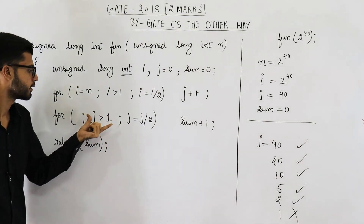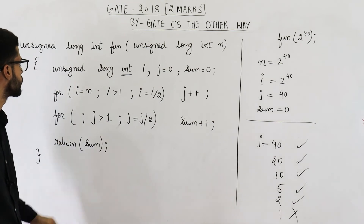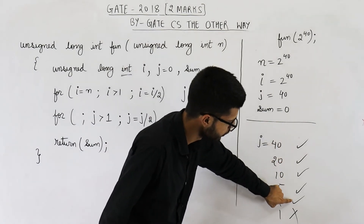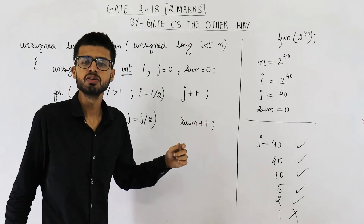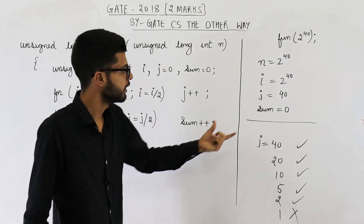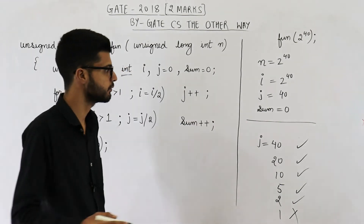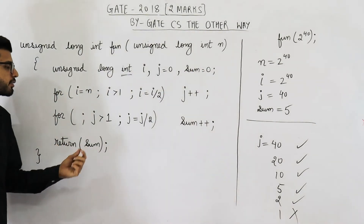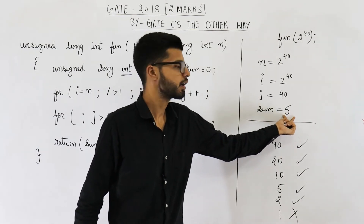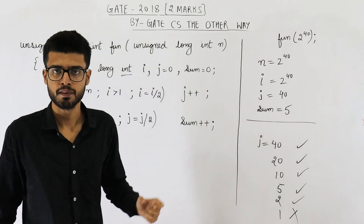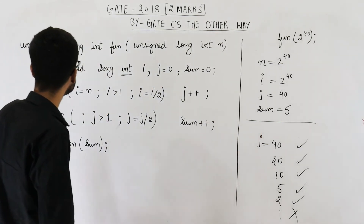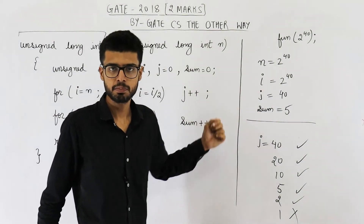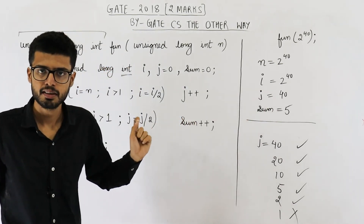In total, sum plus plus was executed 5 times: for j values 40, 20, 10, 5, and 2. Initially sum was 0, so after execution of this loop, sum will be 5. We then execute return sum, which returns this variable with value 5. So the value that is returned is 5. The answer to this question is 5. The return type of this function was unsigned long integer, and sum is a variable of type unsigned long integer with value 5 — that is what is returned.